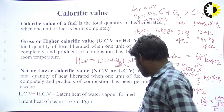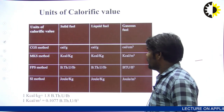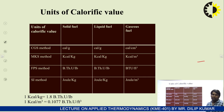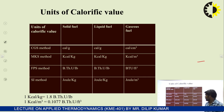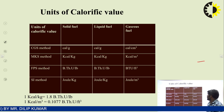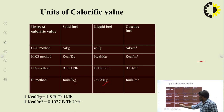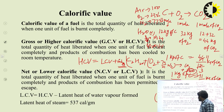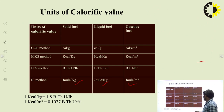The units of calorific value can be expressed in SI or CGS form. The SI unit is joule per kg for solid and liquid fuels, and joule per metre cube for gaseous fuel. In CGS units, for solid and liquid fuel it is calorie per gram, and for gaseous fuel it is calorie per volume (cubic centimetre).